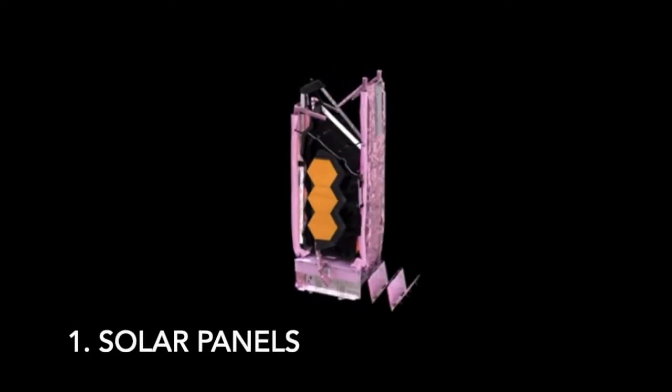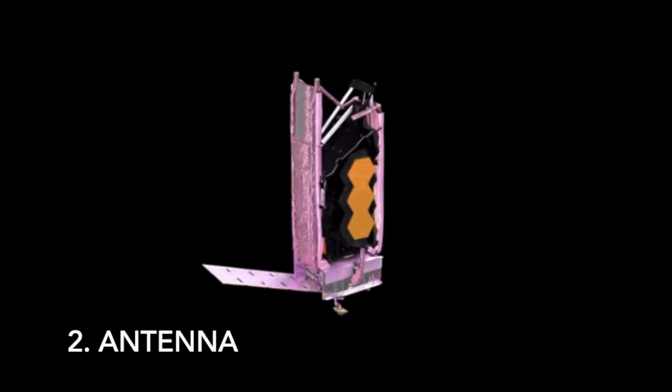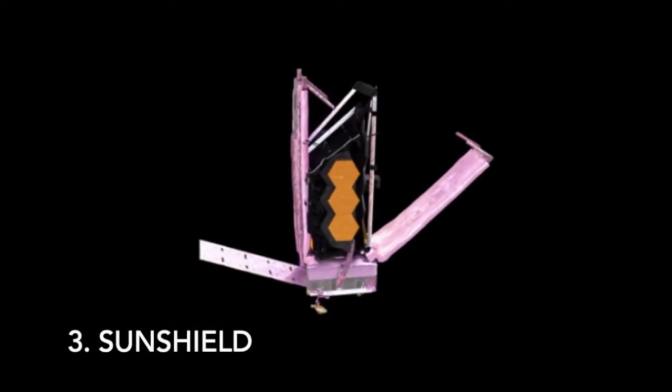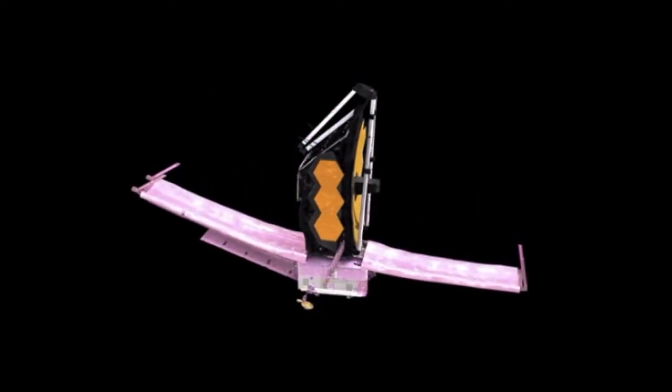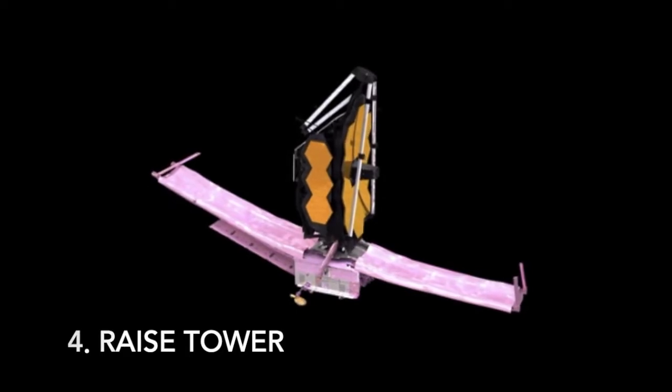First, it will unfold its solar panels to use energy from the sun. Second, it will unfold its antennas in order to communicate with ground control. Third, it will open up its sunshield with the cover on. Fourth, it will raise the tower in order for the sunshield to expand further.